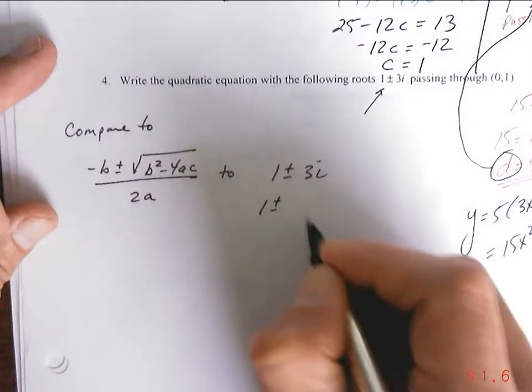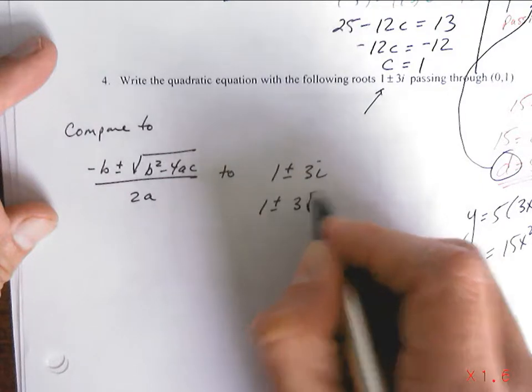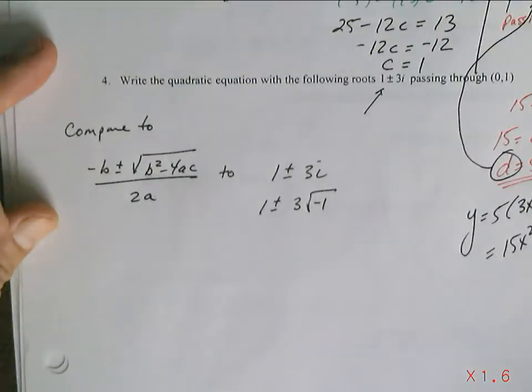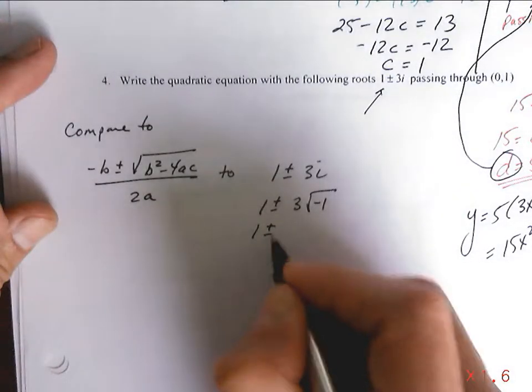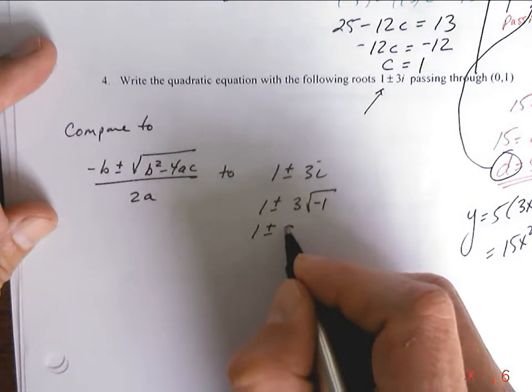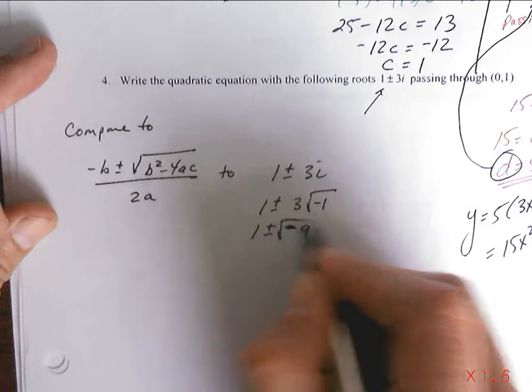1 plus or minus 3 square root negative 1. 1 plus or minus negative 9 square root.